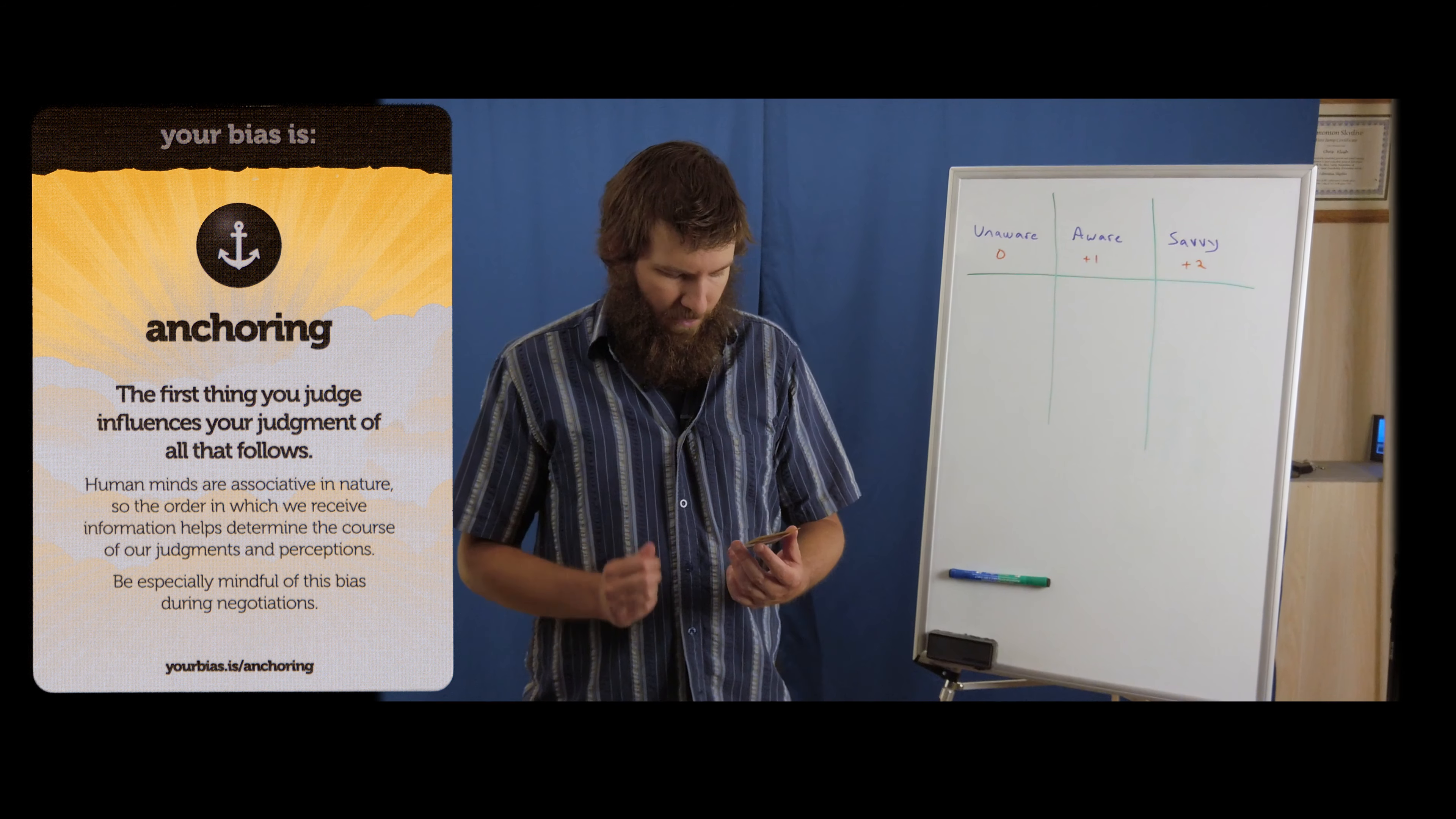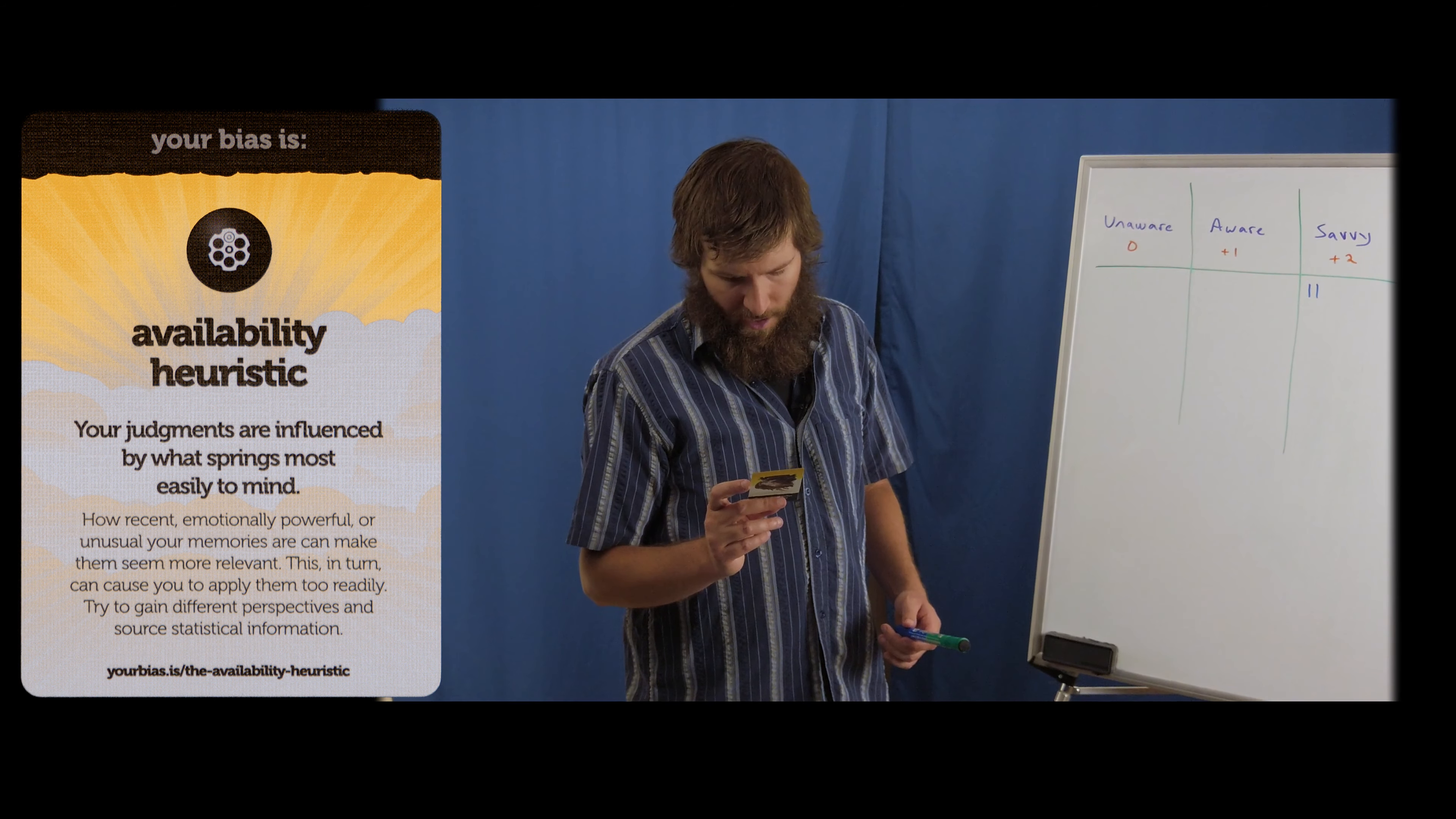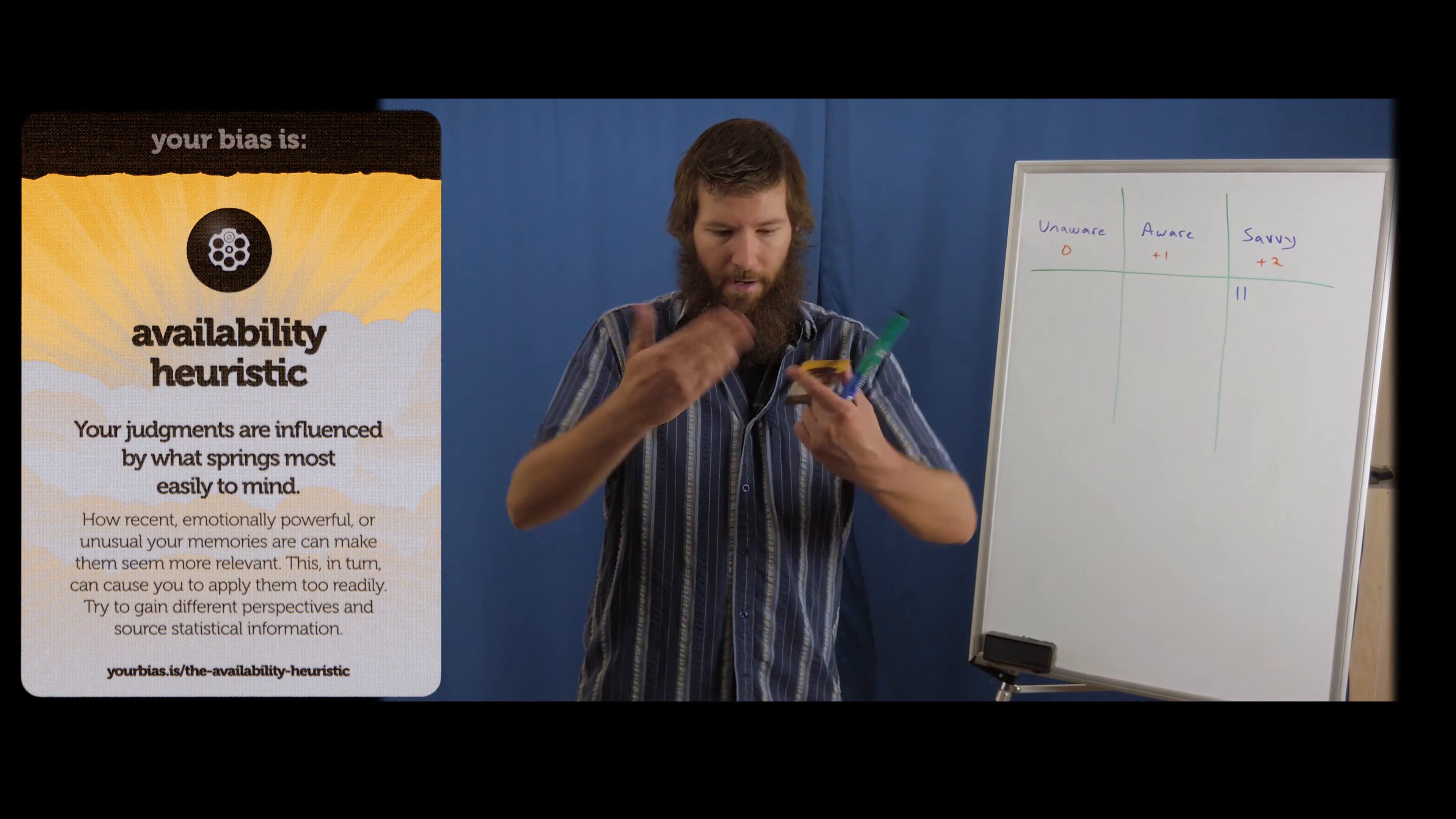All right, so the second card here is sunk cost fallacy. Yes, I'm an entrepreneur. I know the business side of that through and through. Available heuristics. You know what? I actually am quite aware of this. Yeah, I think mostly because I know this affiliates with other things rather readily.